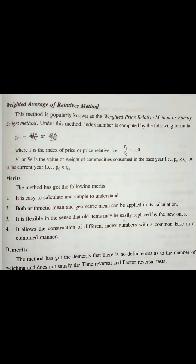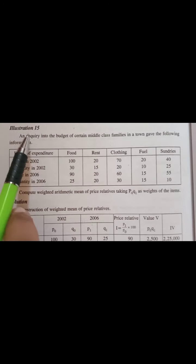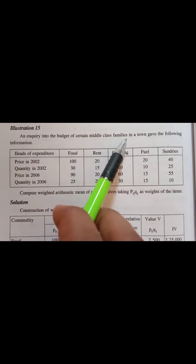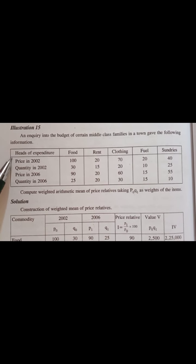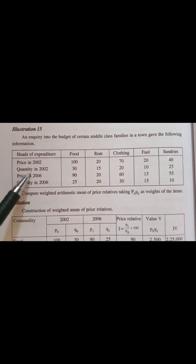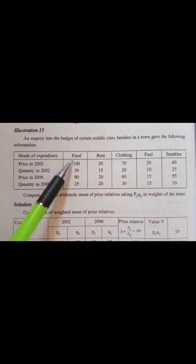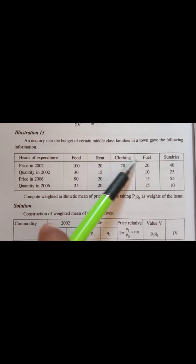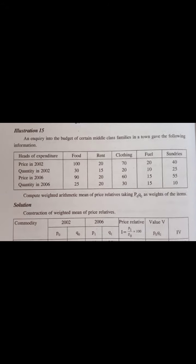Now let us see an illustration or a problem related to average. The question is: an inquiry into budget of certain middle class families in a town gave the following information. The information has expenditure. So price and quantities are given for food, rent, clothing, fuel, and sundries. These all form your commodities. Price and quantity is given in this form.